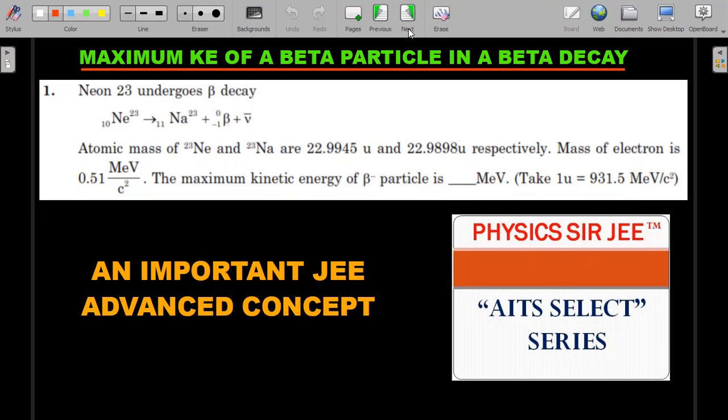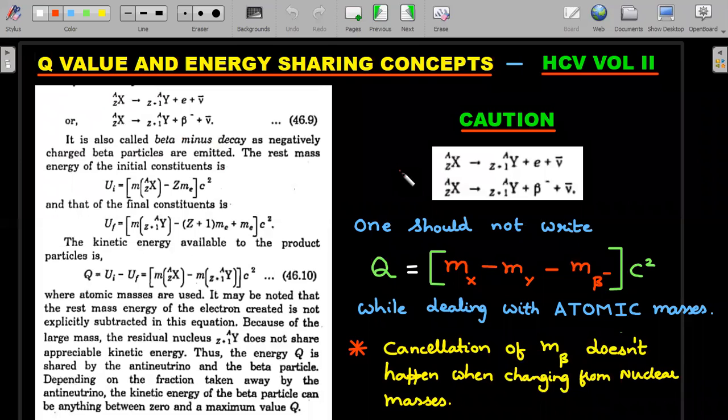With this information you're supposed to answer this question. We'll try to take up some of the concepts involved. I've taken out one page from HC Verma Volume 2 book, equation 46.9, where he discusses in a very beautiful fashion beta minus decay. If any general X parent nucleus decays into a daughter nucleus via beta minus decay, we should know that it's a three particle decay, not two particles. The third particle has been discovered as the anti-neutrino.